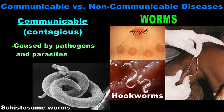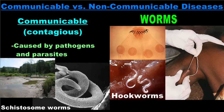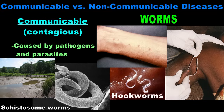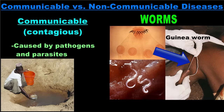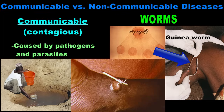Hookworms and schistosome worms, which cause schistosomiasis, are contracted through contaminated soil or water. Both cause a rash and possible diarrhea and can be treated with oral medications. Guinea worms are also contracted by drinking contaminated water. In this case, the worm burrows through flesh, causing pain and burning. There is no treatment except to wait for the worm to emerge from a blister in the skin and slowly extract it by winding the worm around a matchstick.